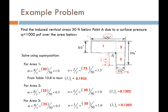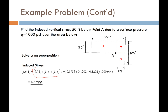Now we have the influence factors for rectangles 1, 2, and 3. We use superposition to add those influence factors together and multiply by Q. That gives the vertical induced stress at a depth of 50 feet below point A. At no point did we ask what the soil type was or what its elastic modulus was — this is how the Boussinesq elastic solutions work.